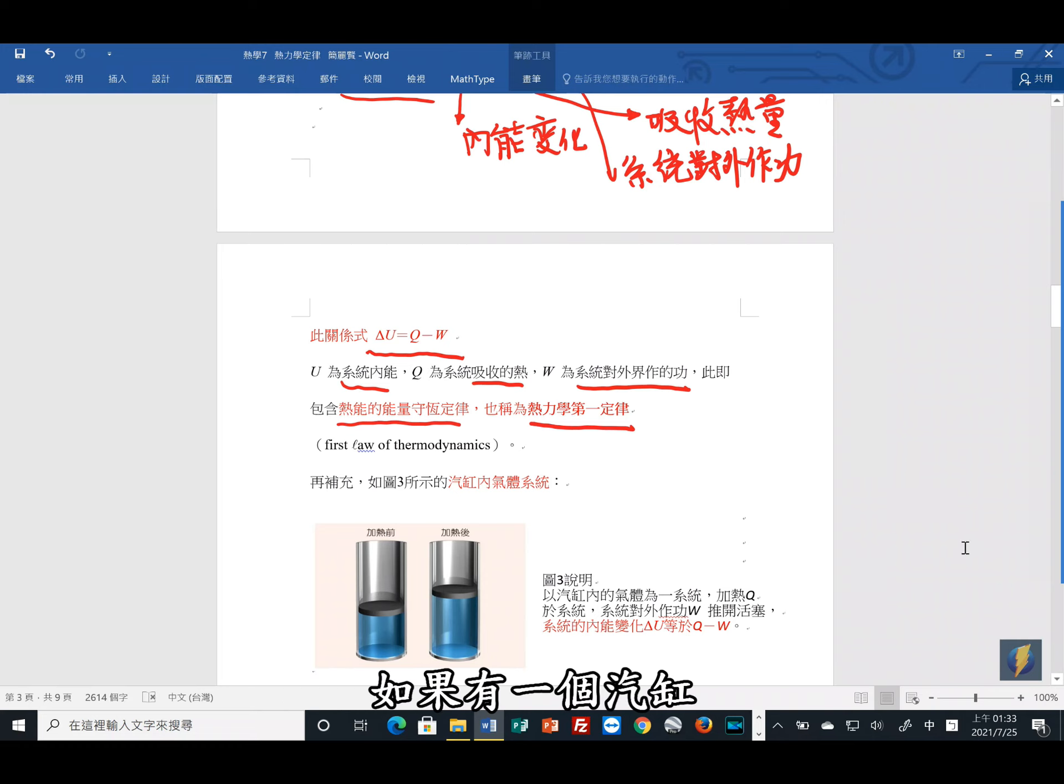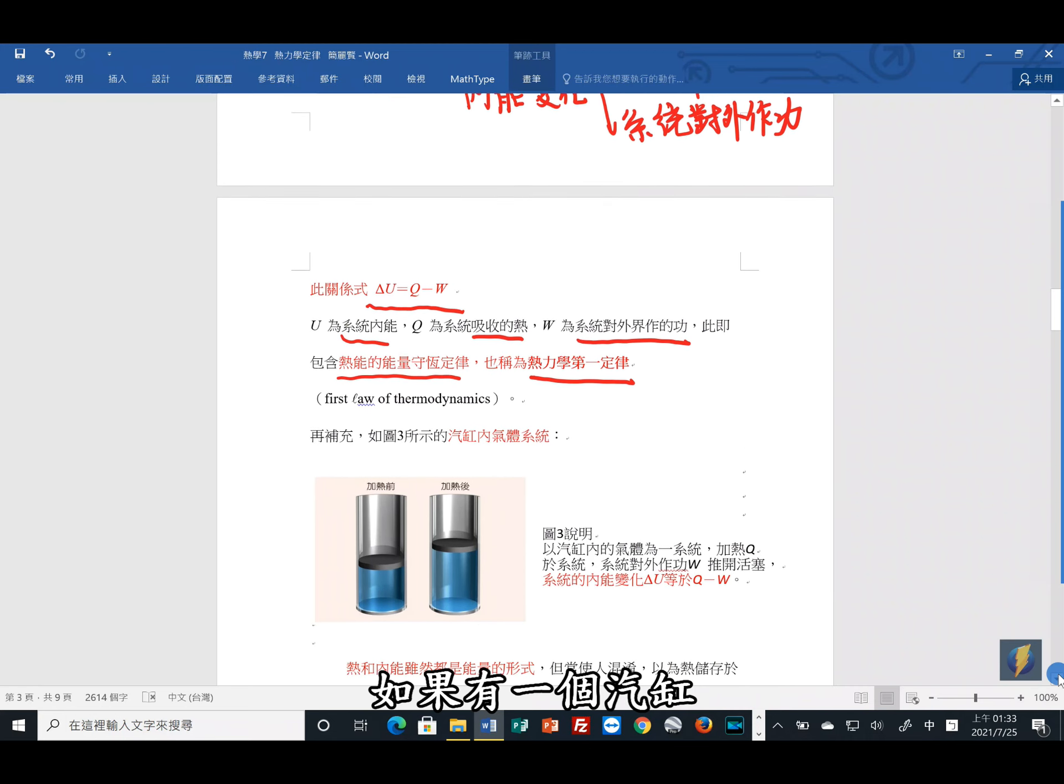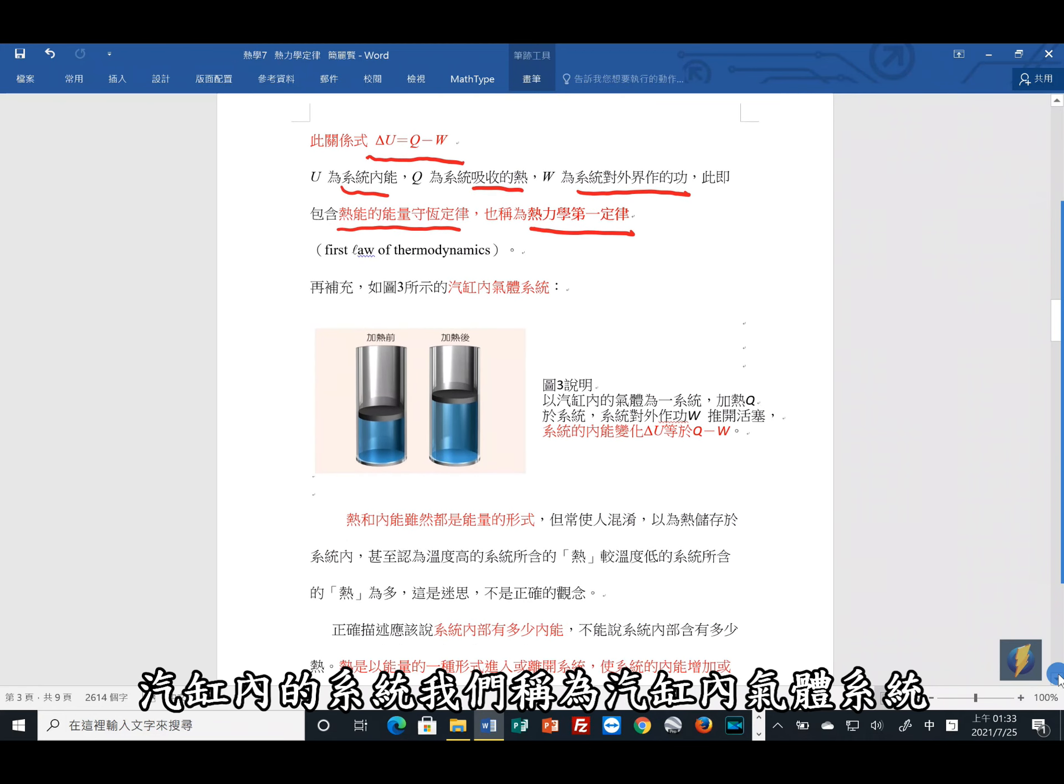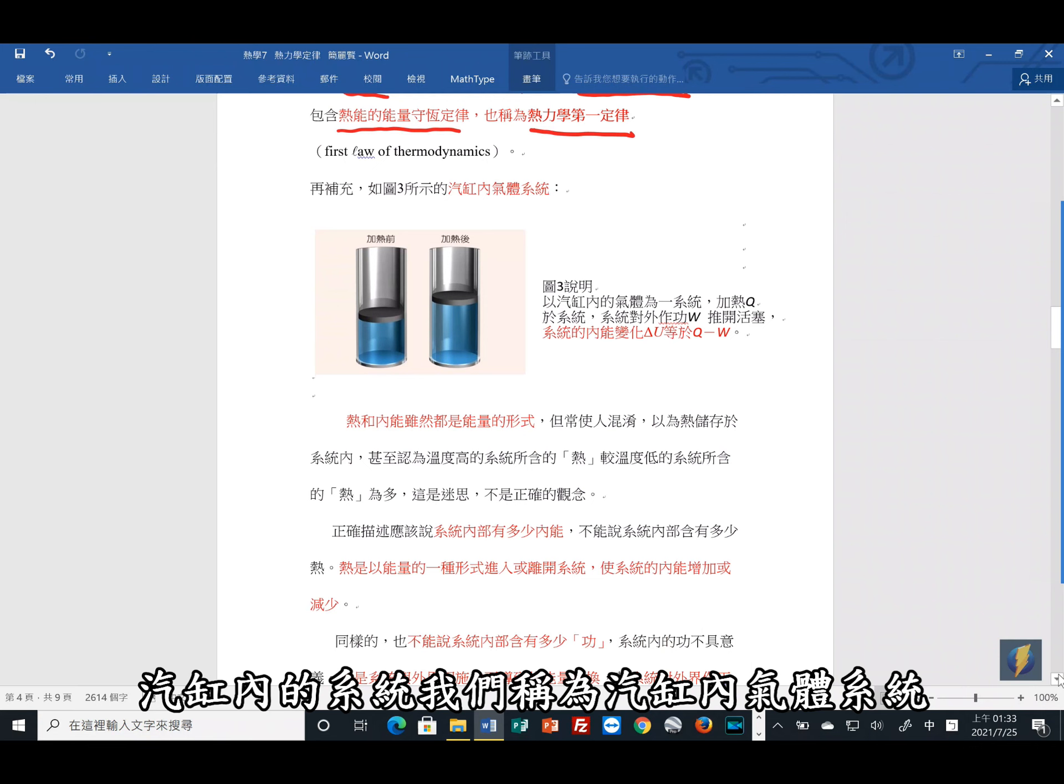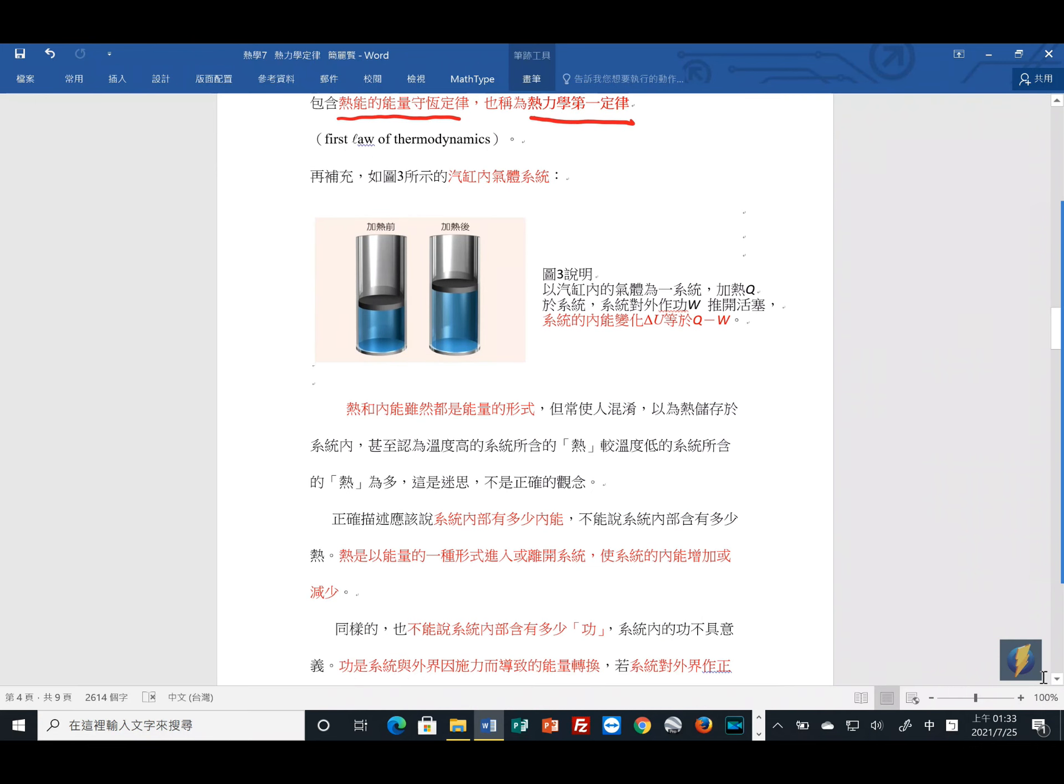我们可以再来补充,如果有一个气缸,气缸内的系统,我们称为气缸内气体系统。当气缸内的气体是一个系统,加热外界就会给我们气缸加热。那么系统对外界做功是W,就会推开活塞。则系统的内能变化ΔU就会是等于Q减W。所以你可以看出这个情况。